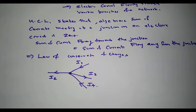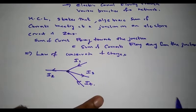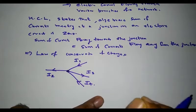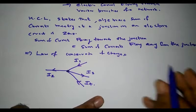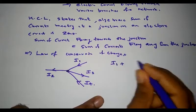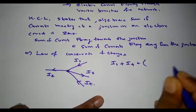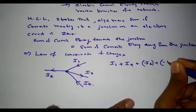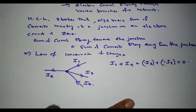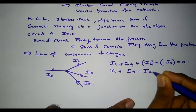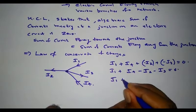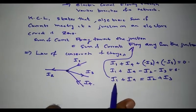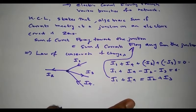Therefore, according to Kirchhoff's current law, we can represent the algebraic sum of currents meeting at a junction in an electric circuit as zero. Taking incoming current as positive and outgoing current as negative, we get: I1 + I4 − I2 − I3 = 0. This can also be written as I1 + I4 = I2 + I3. This is the second statement: the sum of currents flowing towards the junction is equal to the sum of currents flowing away from the junction.